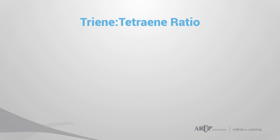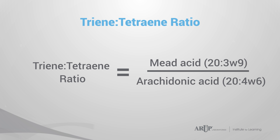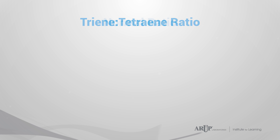In addition to fatty acid measurements, the lab results also include the ratio between omega-9 mead acid and arachidonic acid, called the triene:tetraene ratio. This ratio is used to monitor the status of essential fatty acids.